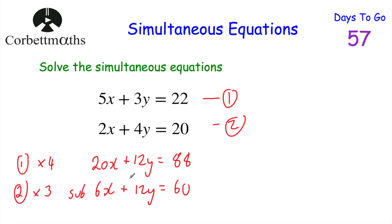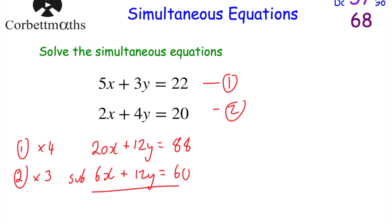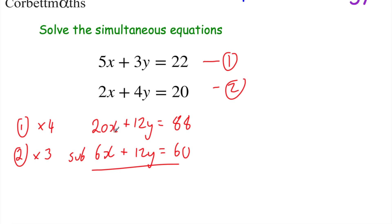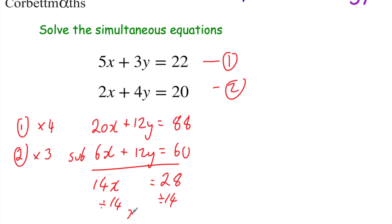We can subtract these two equations from each other and the y's will cancel. 20x − 6x = 14x. 12y − 12y = 0. And 88 − 60 = 28. So 14x = 28. Dividing both sides by 14 gives us x = 2.